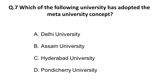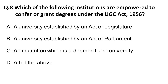The next question: which university has adopted the meta university concept? This is a new concept where the HRD Ministry is testing an idea where you are not bound to a particular curriculum — it is a mix of a credit system where you can take courses from liberal arts and sciences. The options are Delhi University, Assam University, Hyderabad University, and Pondicherry University. Delhi University has adopted this meta university concept, and in the future we will see the majority of universities adopting it according to the HRD Ministry.